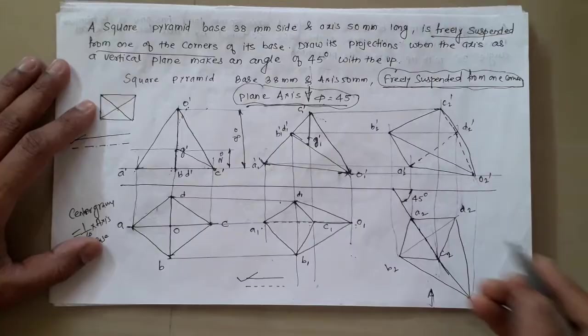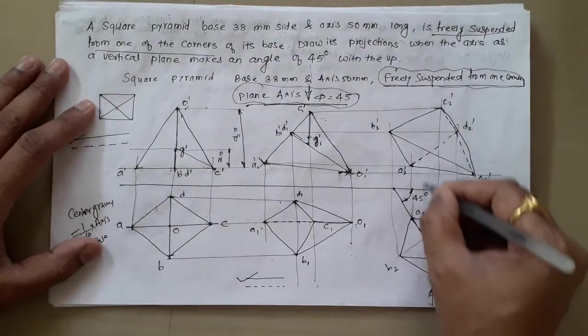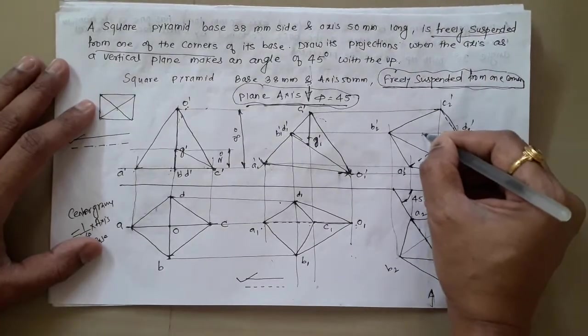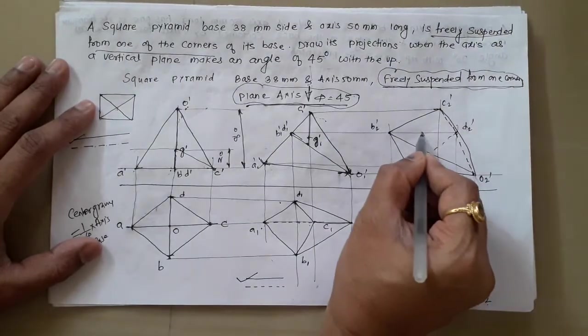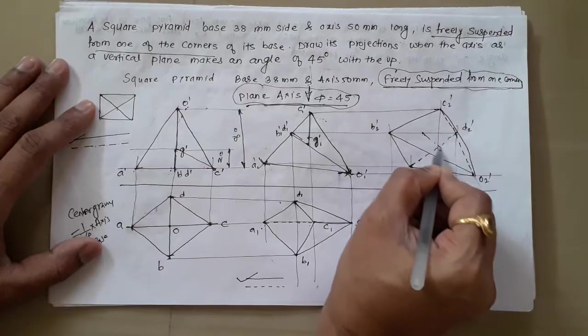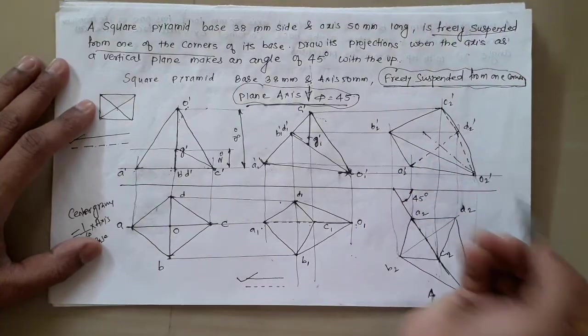Draw the axis line — that is the center line — for the final front view.